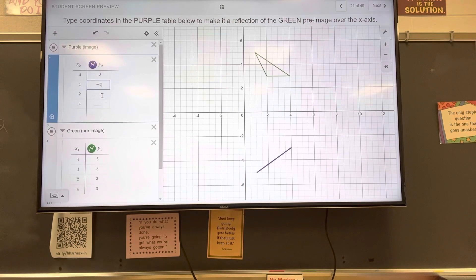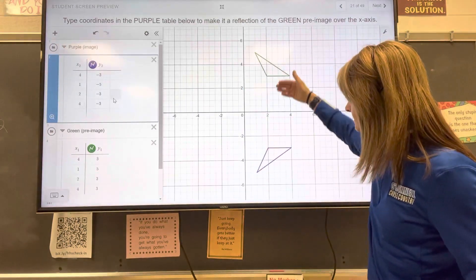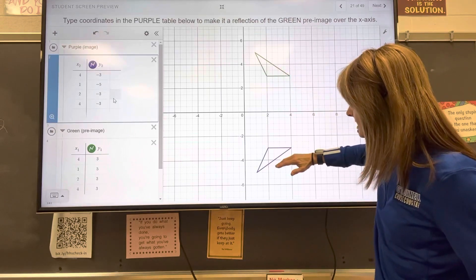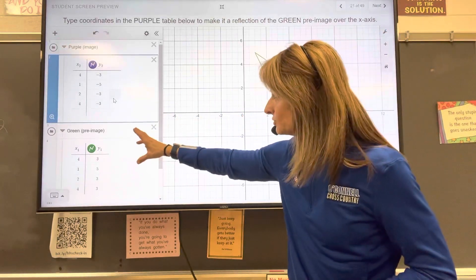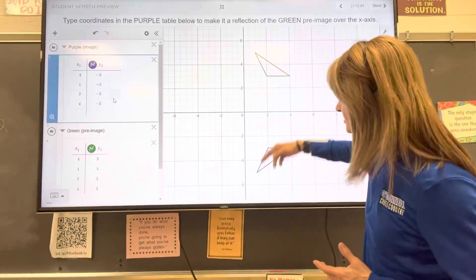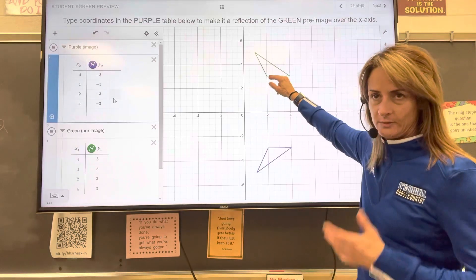Negative 5, negative 3, negative 3. Did I do that right? And we can see these ordered pairs have been created over here. The segments have been drawn. We can see it's a reflection over the x-axis.